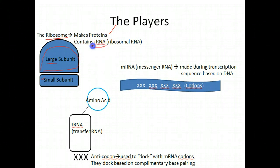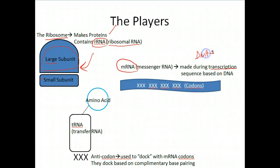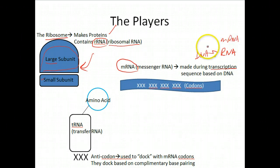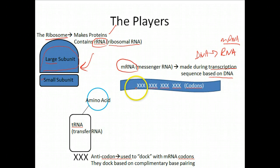Ribosomes contain another kind of RNA, and this is important because there are three types of RNA I want you to know. Ribosomal RNA makes up ribosomes and plays a role in keeping the structure together. The second type is messenger RNA, which you already know about. Messenger RNA is made during transcription — when you go from DNA to RNA, you are essentially making messenger RNA. There are processing steps like the splicing out of introns, but basically you're making messenger RNA based on the DNA sequence. When you look at a messenger RNA strand, you'll see codons — they're three RNA letters long, and each one specifies various amino acids.